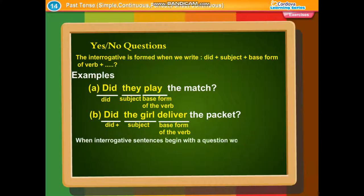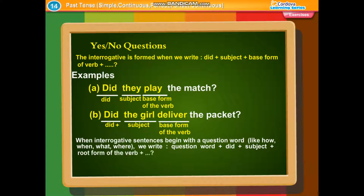When interrogative sentences begin with a question word like how, when, what, or where, we write: question word plus did plus subject plus root form of the verb plus question mark. Examples: When did she leave? What did Neha bring?